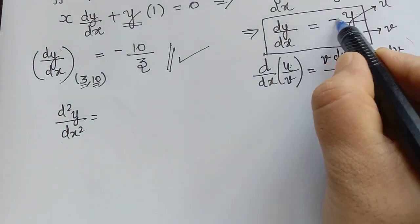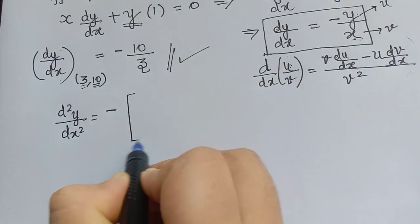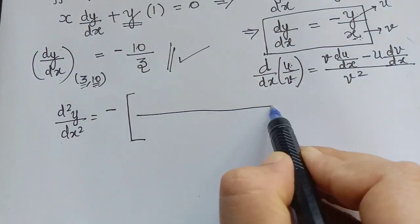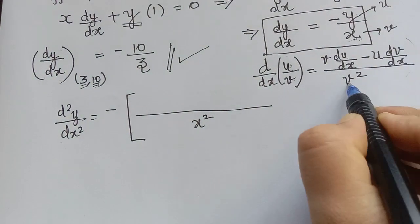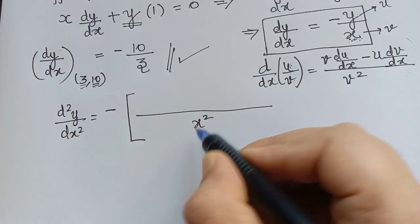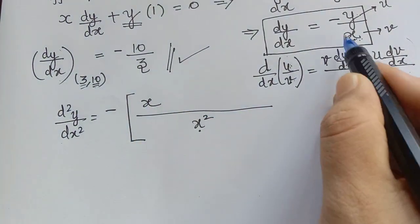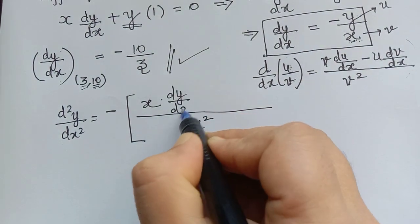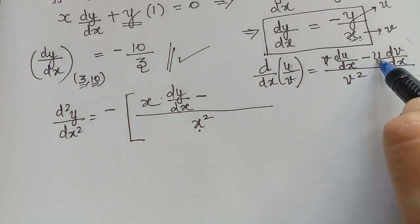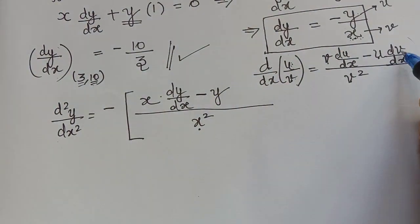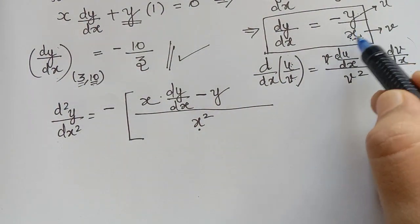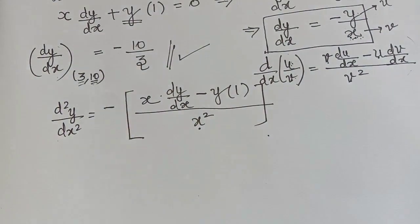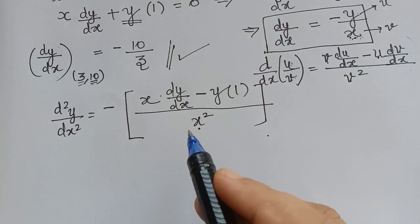Applying the quotient rule to differentiate y/x: d²y/dx² = −[(x · dy/dx − y · 1) / x²]. The denominator is x², we keep x and differentiate y to get dy/dx, minus y multiplied by the derivative of x which is 1.